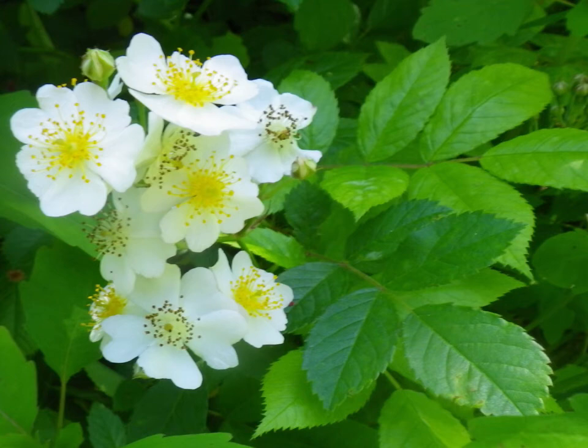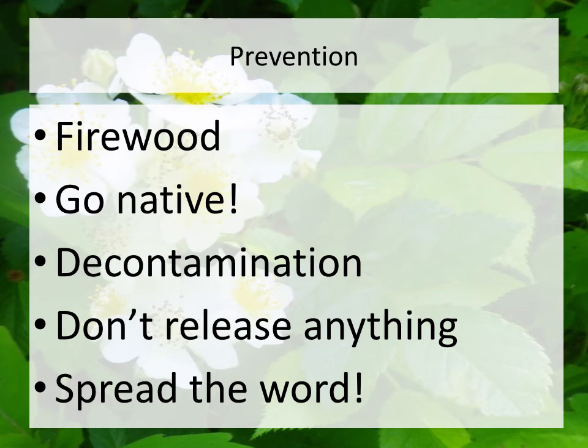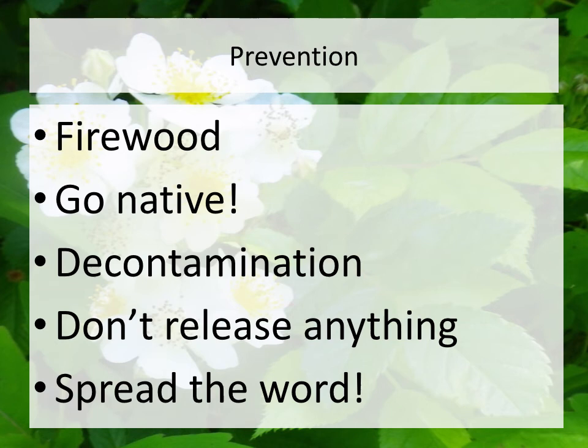Prevention techniques include buying firewood where you plan to burn it so live insects are not transported via cut wood. When planting, choose native species — there have been many cases where a non-native species was recommended and then later found to be harmful, a big example being autumn olive. Decontaminate gear and equipment between sites or trails. Don't release unwanted pets or plants into the wild. And educate on invasives so people know what they have before they manage incorrectly.